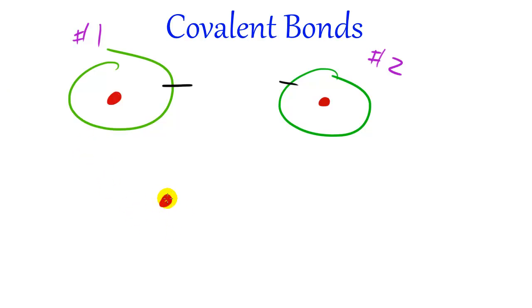So the final diagram, whatever you want to call it, basically ends up looking like this. You have two hydrogens and instead of one having both of them, they decide to share their electrons just like that. And this really is what ends up happening.